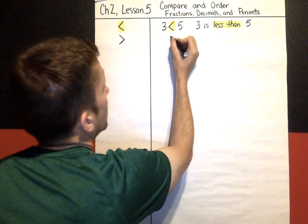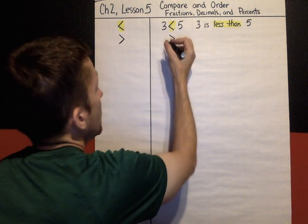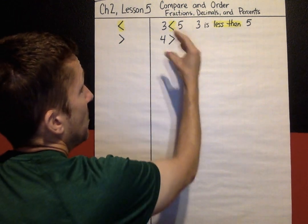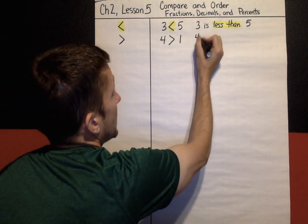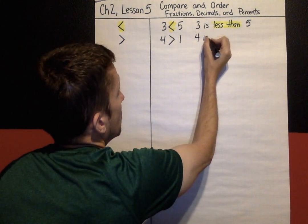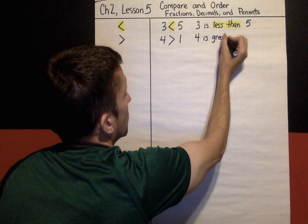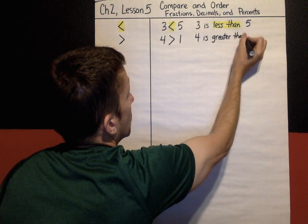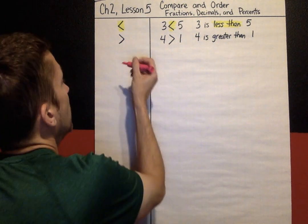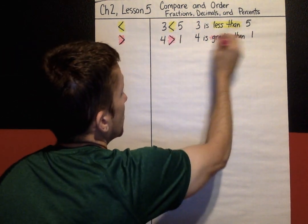Here's another example. If I have that symbol, I can put in numbers that would work — four and one. The mouth would eat towards the four. Translating that left to right: four is greater than one. So this symbol means greater than.